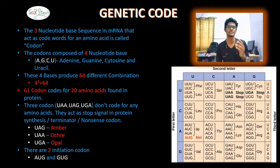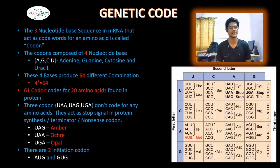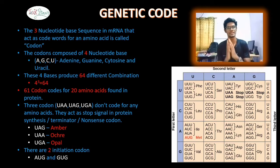Out of those 64 codons, 61 codons code for amino acids. The remaining 3 are stop codons: UAA, UGA, and UAG.